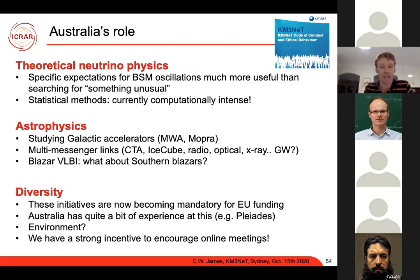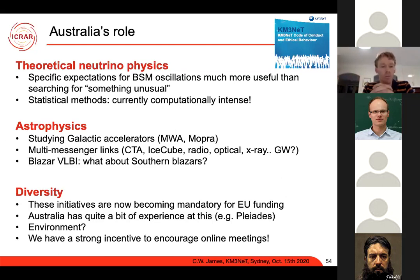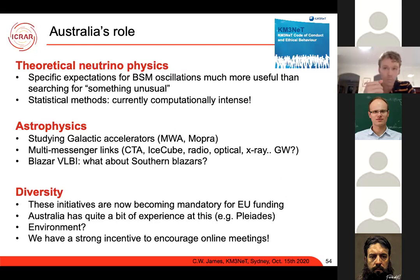As far as Australia's role: we want to better understand galactic accelerators and there's a clear role here — MWA is already studying these sources, and any multi-messenger links matter. Australia is involved in CTA, IceCube, radio, optical, and X-ray groups, and gravitational wave follow-ups — so why not neutrinos too? Blazars studied in VLBI radio are particularly relevant, and Australia is home to Southern Hemisphere VLBI networks. There are also diversity and inclusion initiatives — now mandatory for EU-funded projects — where Australia has a head start, and the speaker is one of two members of KM3Net's equality, diversity, and inclusion committee.